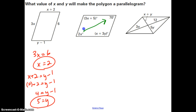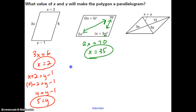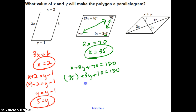For the next one, you can use opposite angles being congruent or consecutive angles being supplementary. Using opposite angles: 2X equals 70, so dividing by 2 gives X equals 35. Now, Y only appears in one angle, so set up the equation X plus 3Y plus 70 equals 180, since consecutive angles are supplementary. Substituting X equals 35: 3Y plus 105 equals 180. Subtracting 105 from both sides gives 3Y equals 75, and dividing by 3 gives Y equals 25.